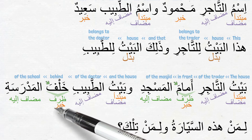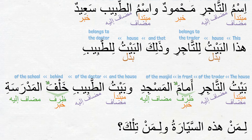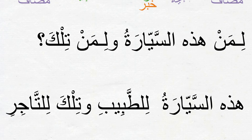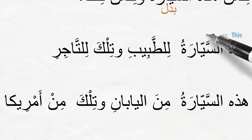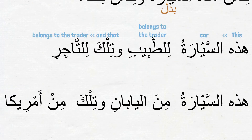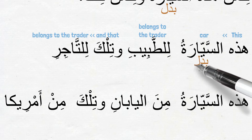In particular, ism خلف is the خبر شبه جملة because it is coming as ظرف, which is a منصوب ism indicating a place. Moving on — the next sentence is a question: لمن هذه السيارة ولمن تلك — Whose is this car? And whose is that? Here, السيارة is coming as بدل for هذه. The answer is: هذه السيارة للطبيب وتلك للتاجر — This car belongs to the doctor and that belongs to the trader. The only بدل here is the ism السيارة.